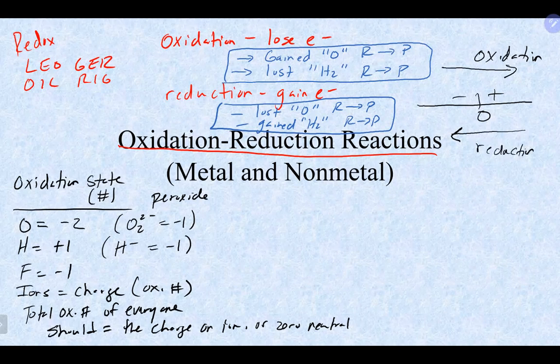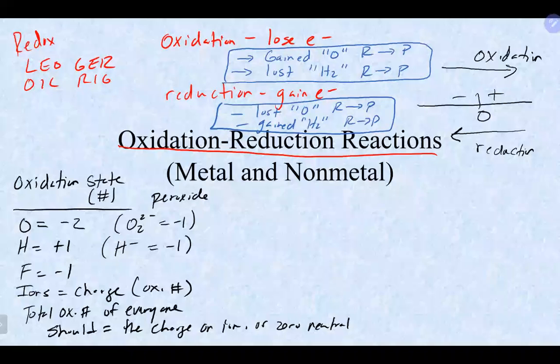Oxidation and reduction always occur together. If something gets oxidized, something else gets reduced. If you figure out one, you know the other by default — that makes it relatively straightforward.